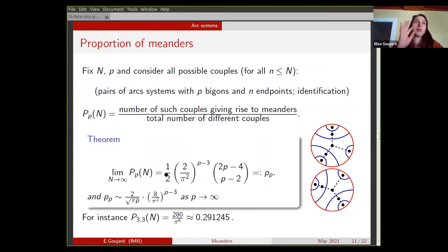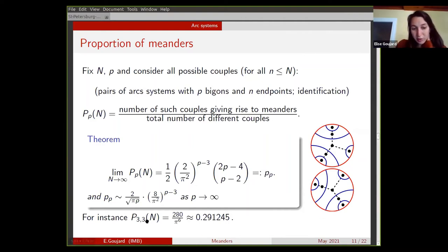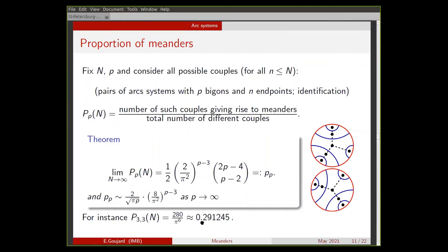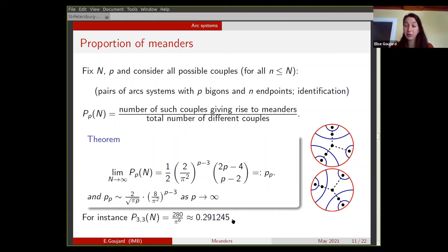What is really interesting is that this is a nonzero, positive number. Furthermore, this proportion of gluings that give rise to meanders only depends on the total number of bigons. So you could distribute the bigons between the two components however you want. For instance, in this picture there are three bigons on the north hemisphere and three on the south, but you could do two and four — it gives the same proportion as n goes to infinity. The proportion corresponding to three bigons on each side is close to 0.3, which is actually quite large.